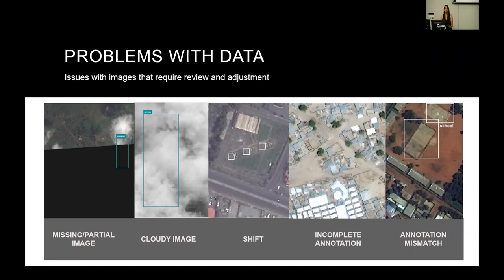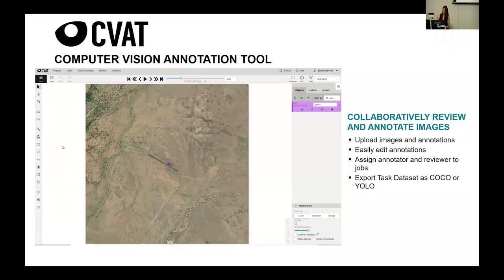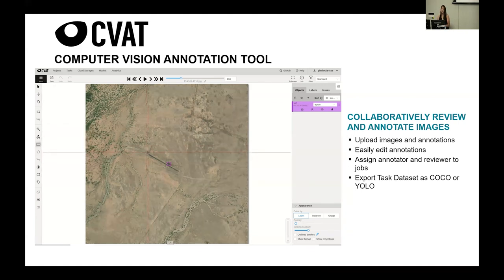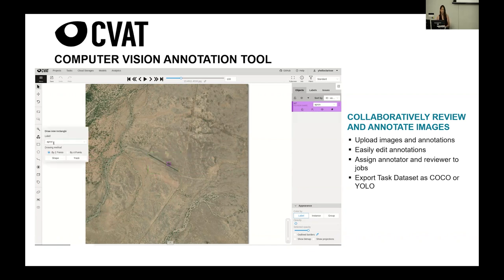Problems you'll run into with this: there are still issues that require review and adjustment. You could have missing or partial imagery, a feature totally obscured by clouds, a shift between where it was mapped and where the image shows the feature, or the area could be incorrectly annotated. For that, there's another free open source tool called Computer Vision Annotation Tool, also called CVAT, which allows your team to collaboratively review and annotate the images.